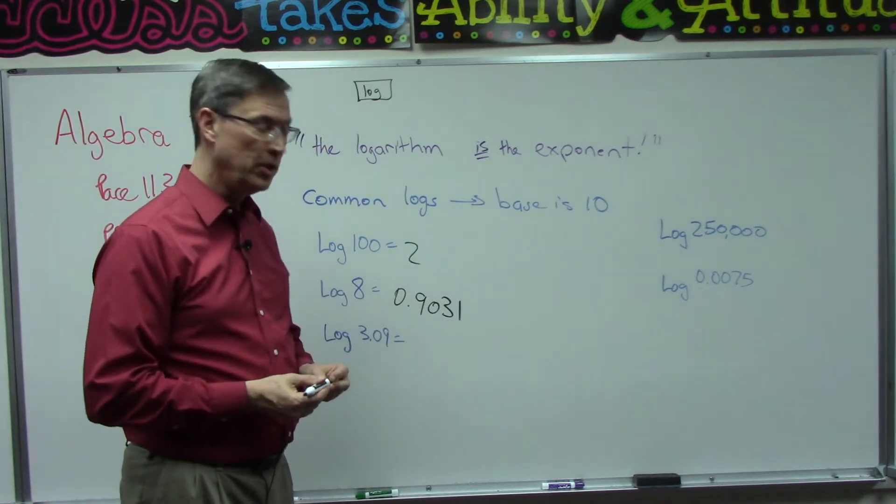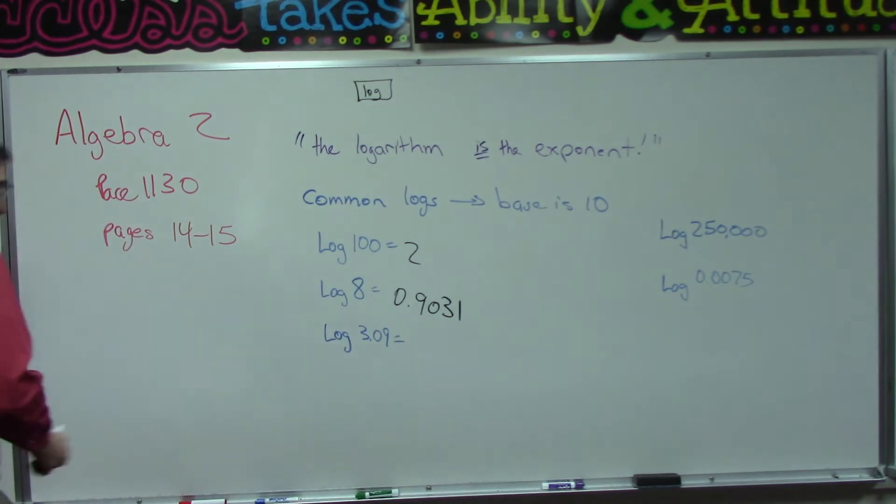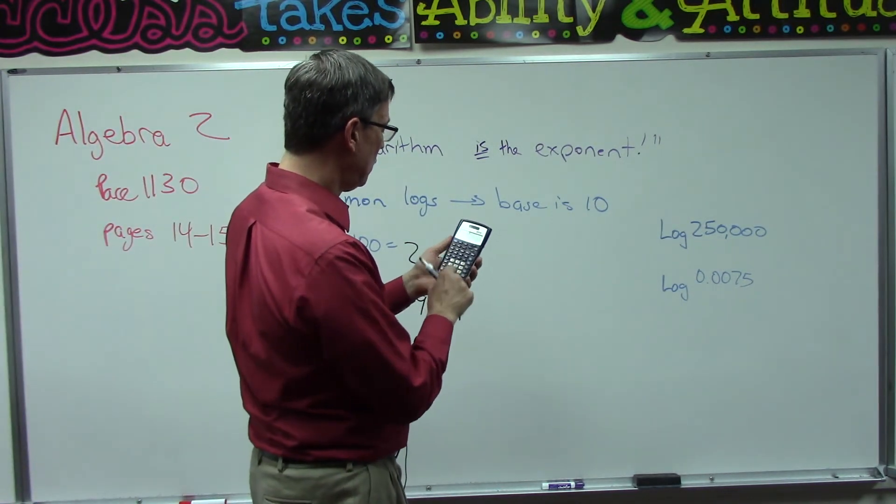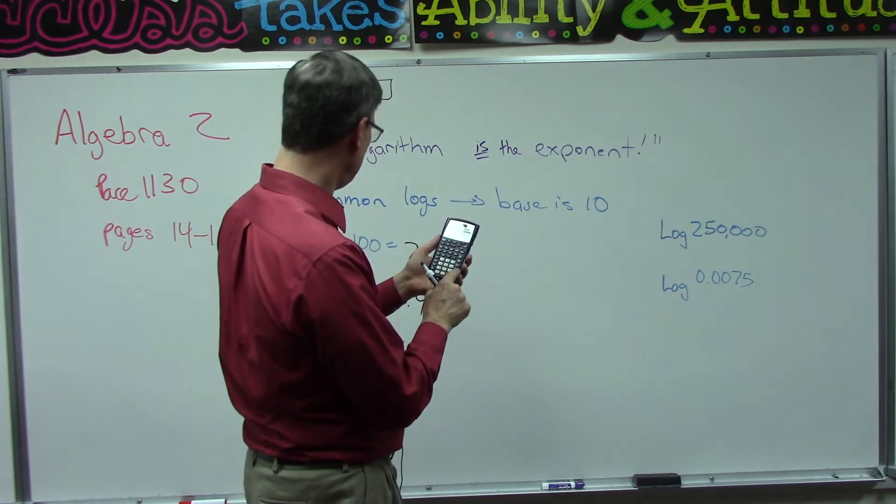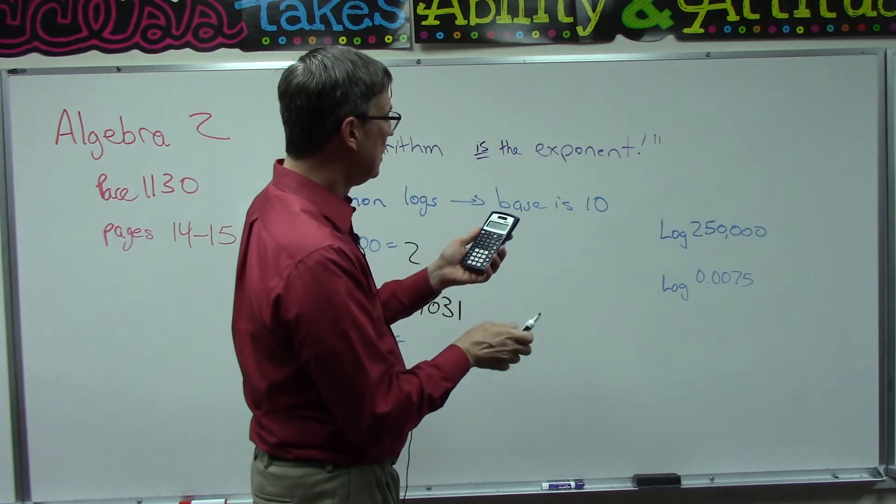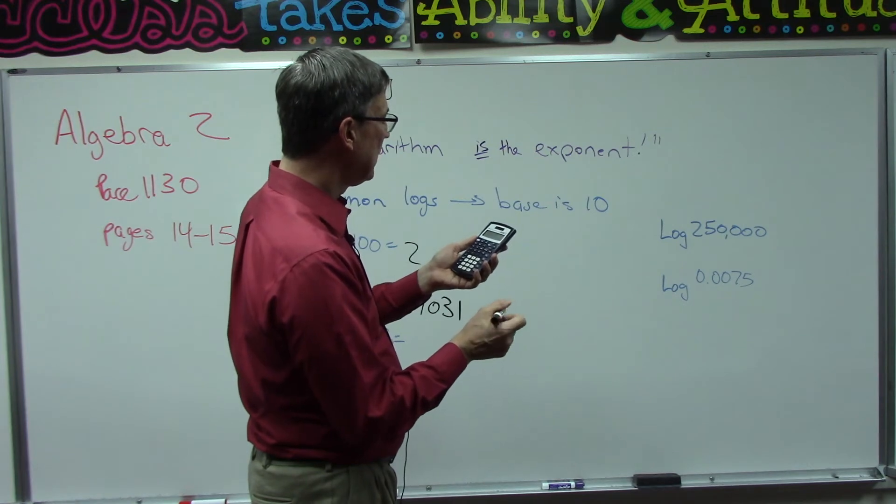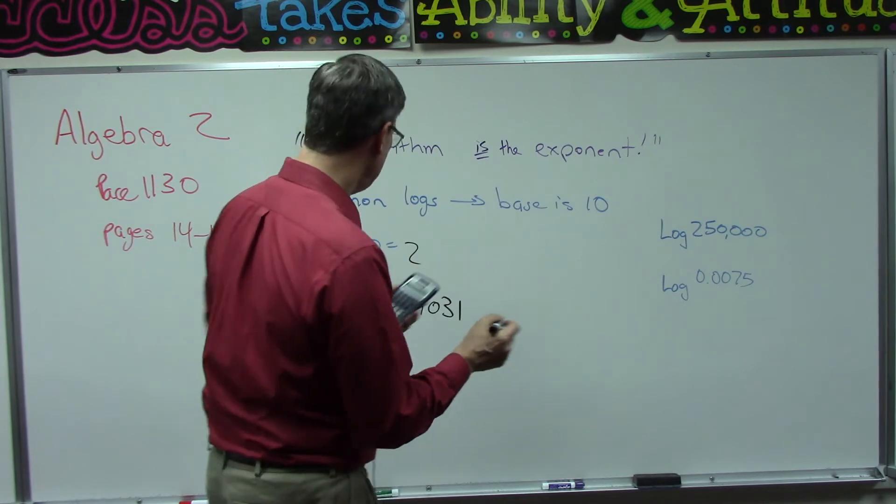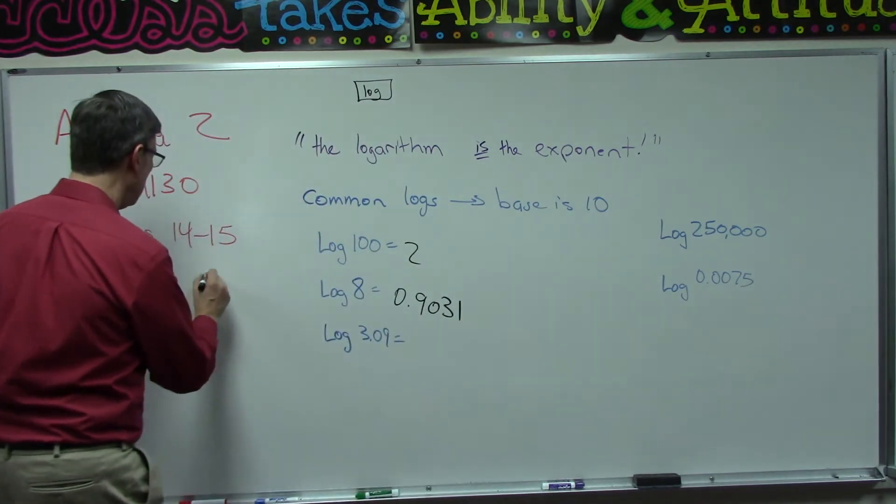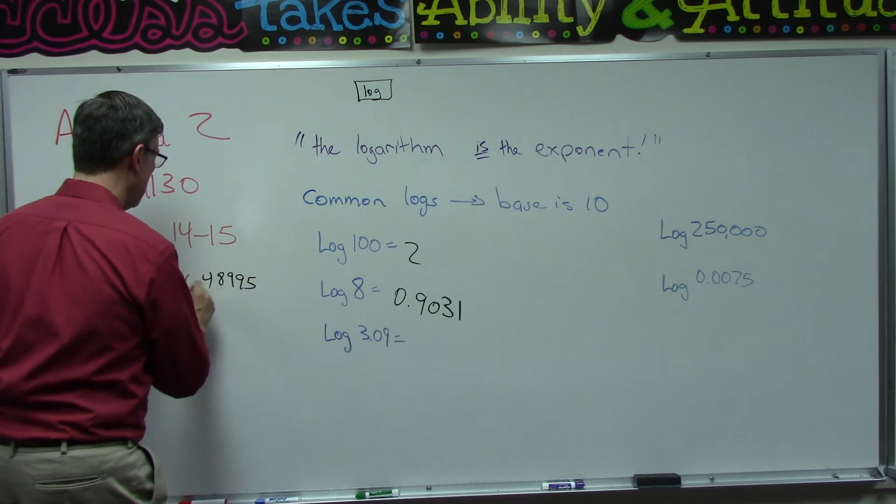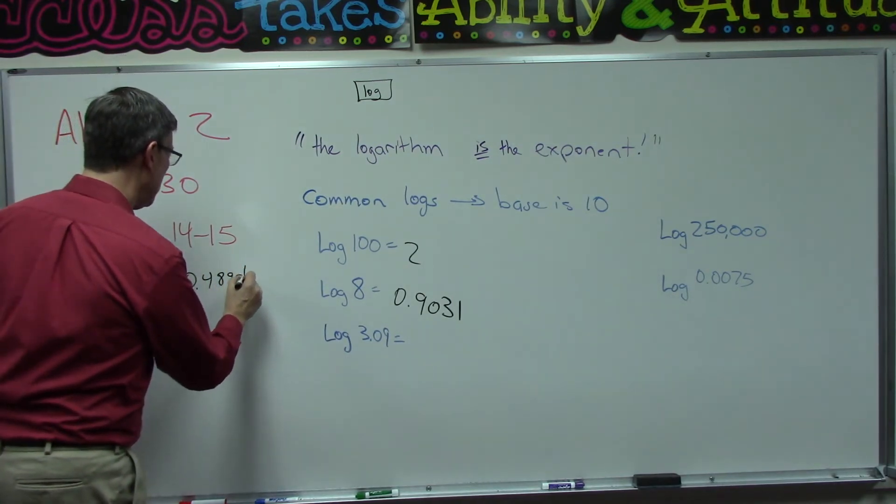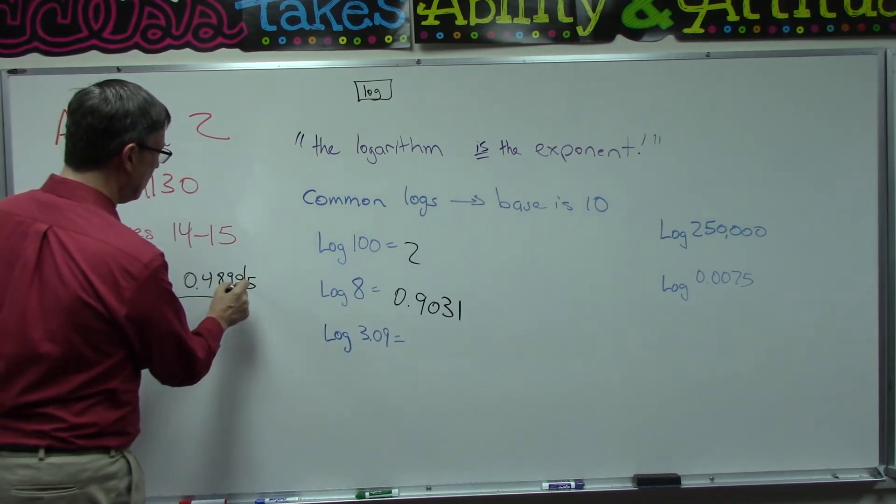All right, let's do this next one together. Let's use our calculators. Clear. I'm hitting log, 3.09, do it with me. Hit enter and on my calculator here I have 0.48995.